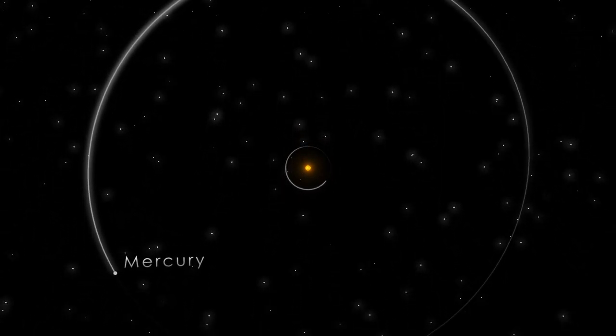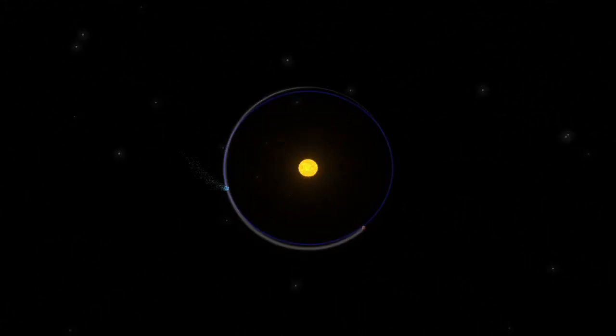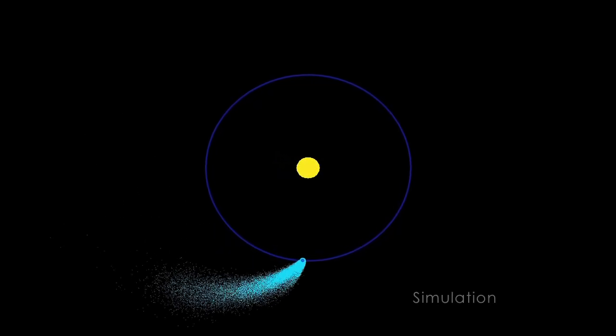But this planet pays a steep price for skirting its Sun. Sometimes, the star erupts with powerful flares, flares that heat the planet's upper atmosphere so much that the gases simply escape.